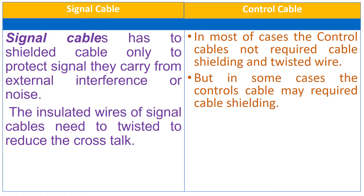The signal cables have to be shielded cable only to protect the signal they are carrying from external interference or noise. The insulated wires of signal cables need to be twisted to reduce the crosstalk. While in most cases, the control cables do not require any cable shielding and twisted pairs, but in some cases control cables may also have cable shielding.